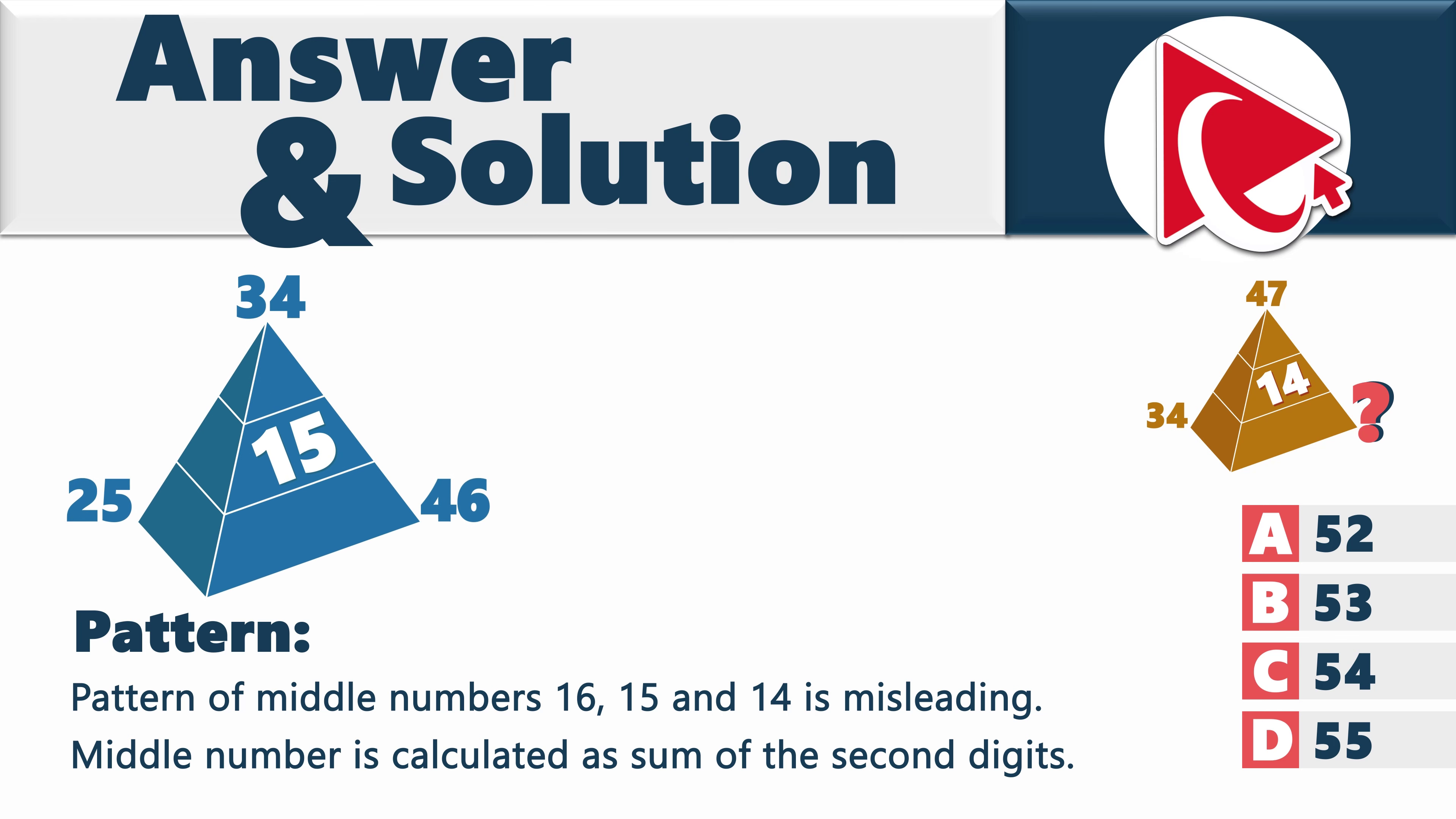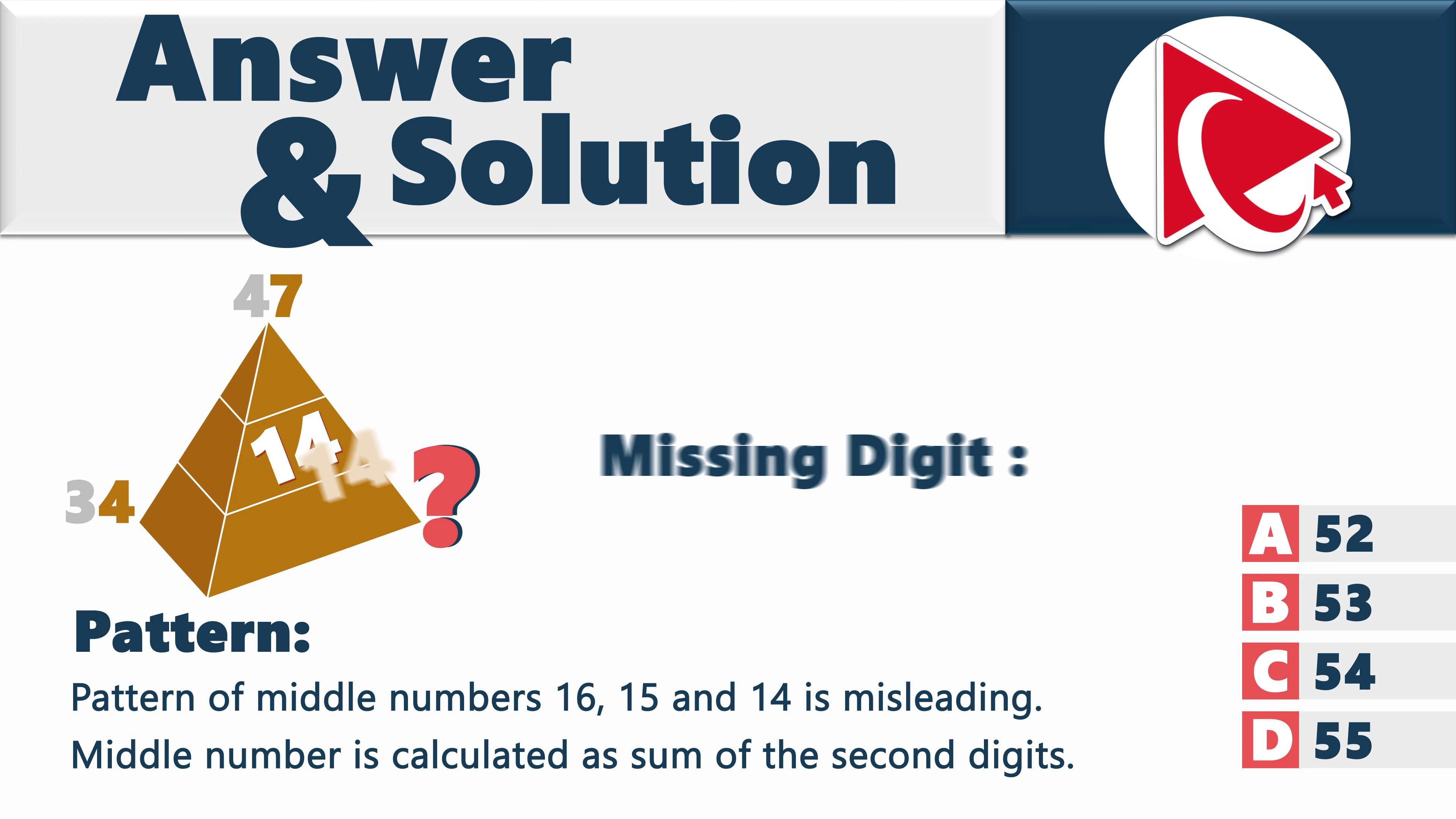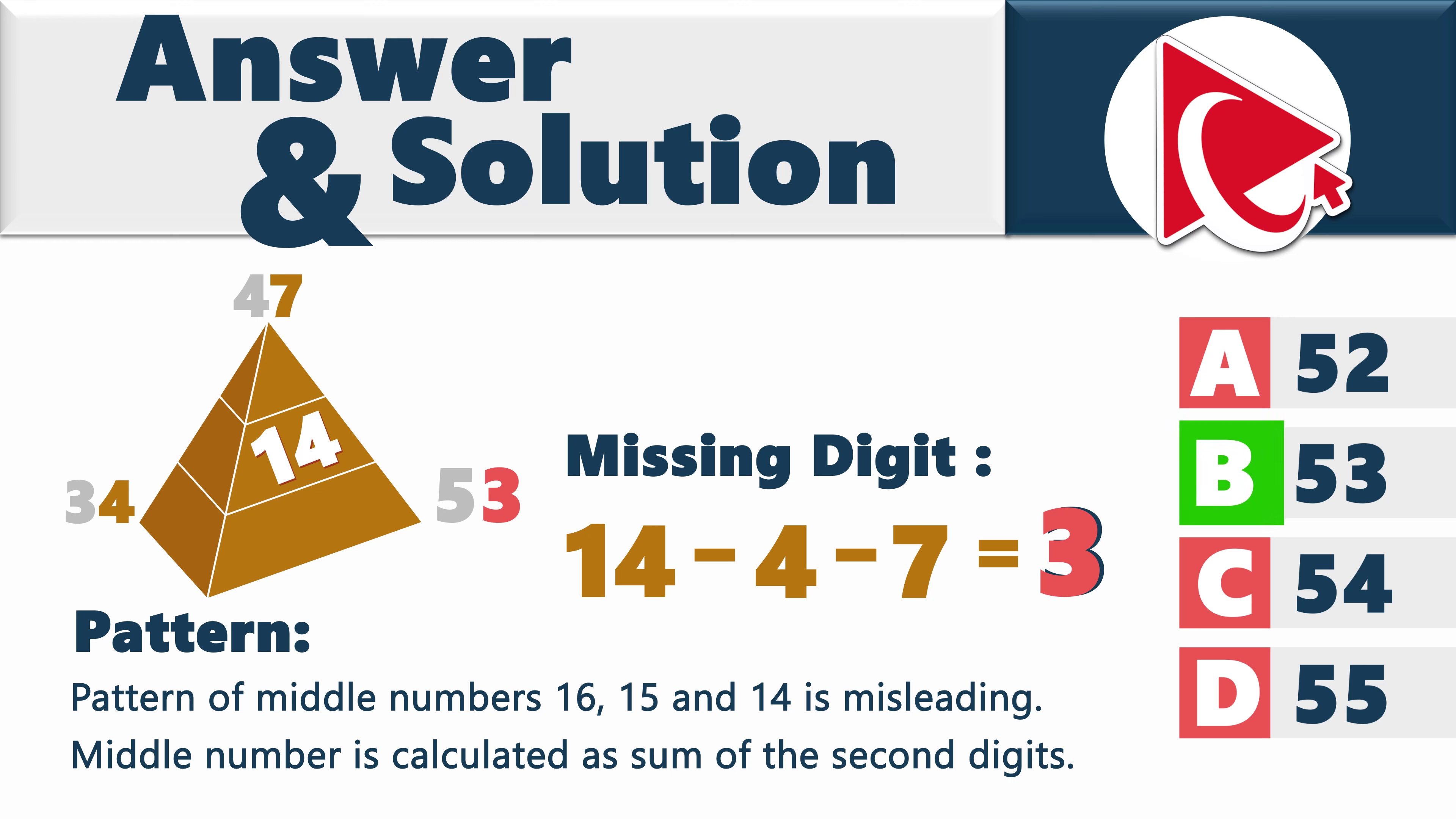If you look at the second pyramid, the numbers 5, 4, and 6 are used in the calculation. And sum of 5, 4, and 6 is 15. So, for the missing number, we need to build a quick equation. Because we know the final number, 14, and two of the numbers used in the calculations, 4 and 7, we can build a quick equation. 14 minus 4 minus 7 equals 3. So, the calculated digit here is 3, and the missing number is choice B, 53.